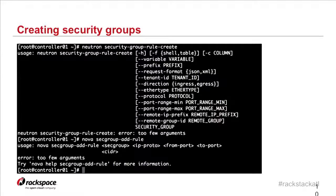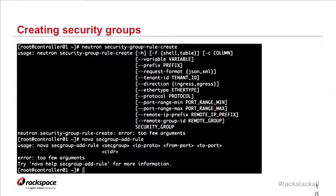When creating security groups, there are a couple of different tools we can use. The Nova commands still work — they just pass that functionality through to Neutron. The Neutron tool also works and exposes the full complement of functionality available with Neutron. One of the biggest differences is that if you want to create egress security group rules, you need to use the Neutron tool, which lets you specify direction with the direction flag. If you have automation that already uses Nova commands, it'll keep working, but if you want to use different functionality, you'll need to move to Neutron.